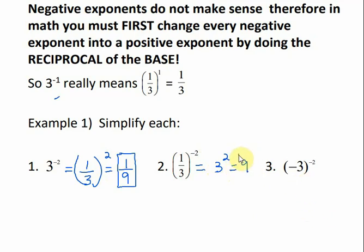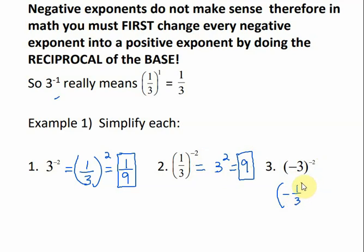Flipping our bases only changes our exponents from negative to positive — it doesn't change the base. So for negative 3 to the negative 2 power, we want to get rid of that negative exponent. I flip my base and it's still negative, so it becomes negative 1 third to the positive 2 power. When I square negative 1 third, it becomes positive 1 ninth.